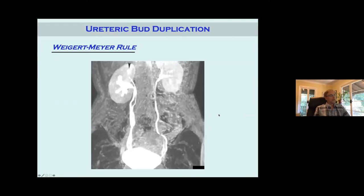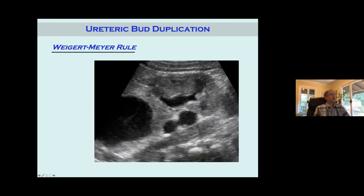Duplicated ureters are not always abnormal — most of the time they're actually normal. You can have a Y-type duplication with two normal kidneys, duplicated all the way down to the bladder with maybe just a little dysplasia or relatively normal kidneys. Not all duplications are associated with abnormalities, but they can be. We usually don't see them until they are, because you don't usually run into a problem unless you have an ectopic ureter or high-grade reflux.